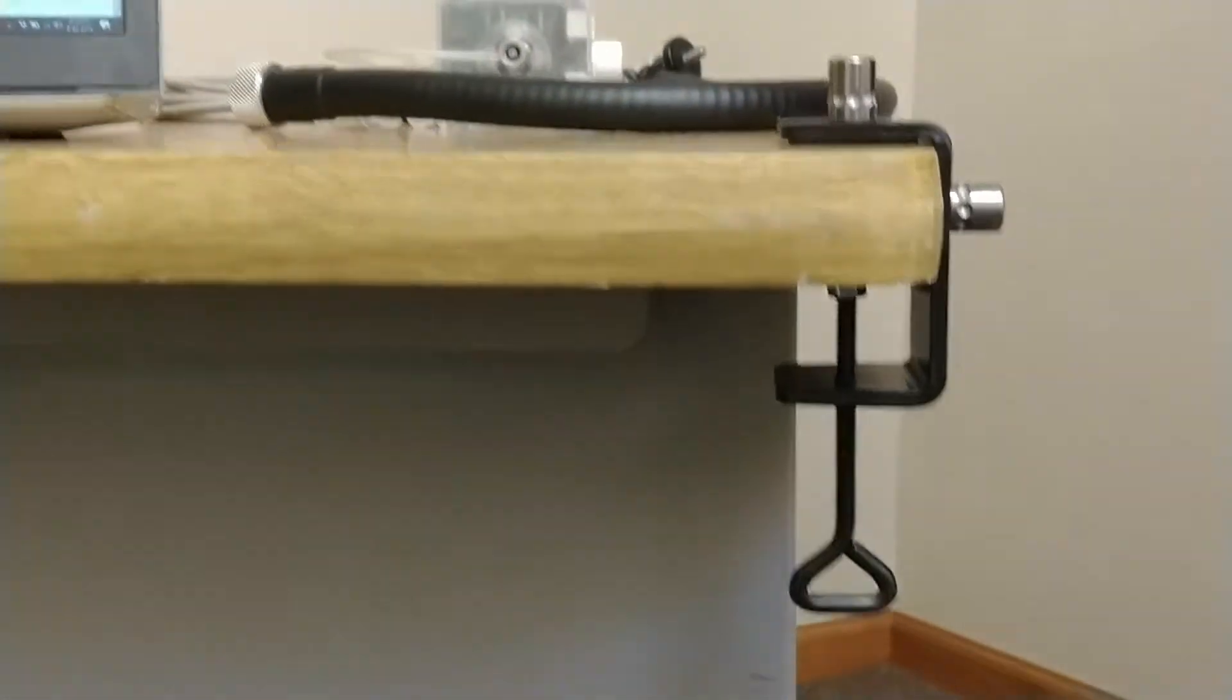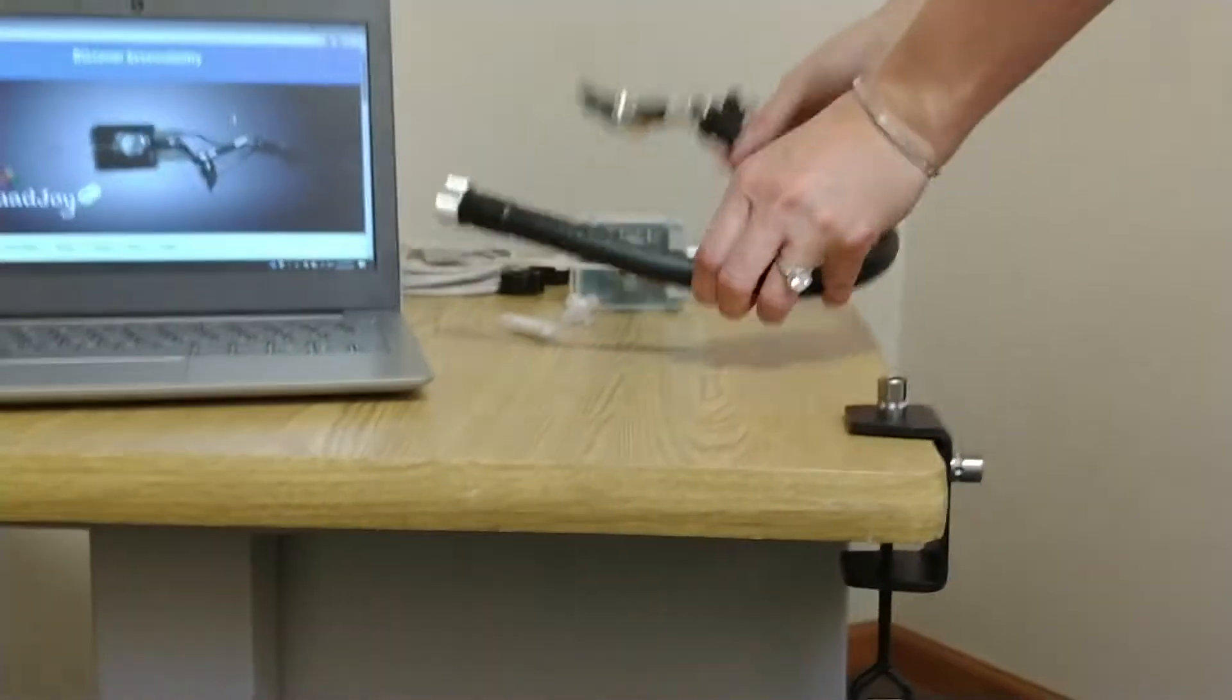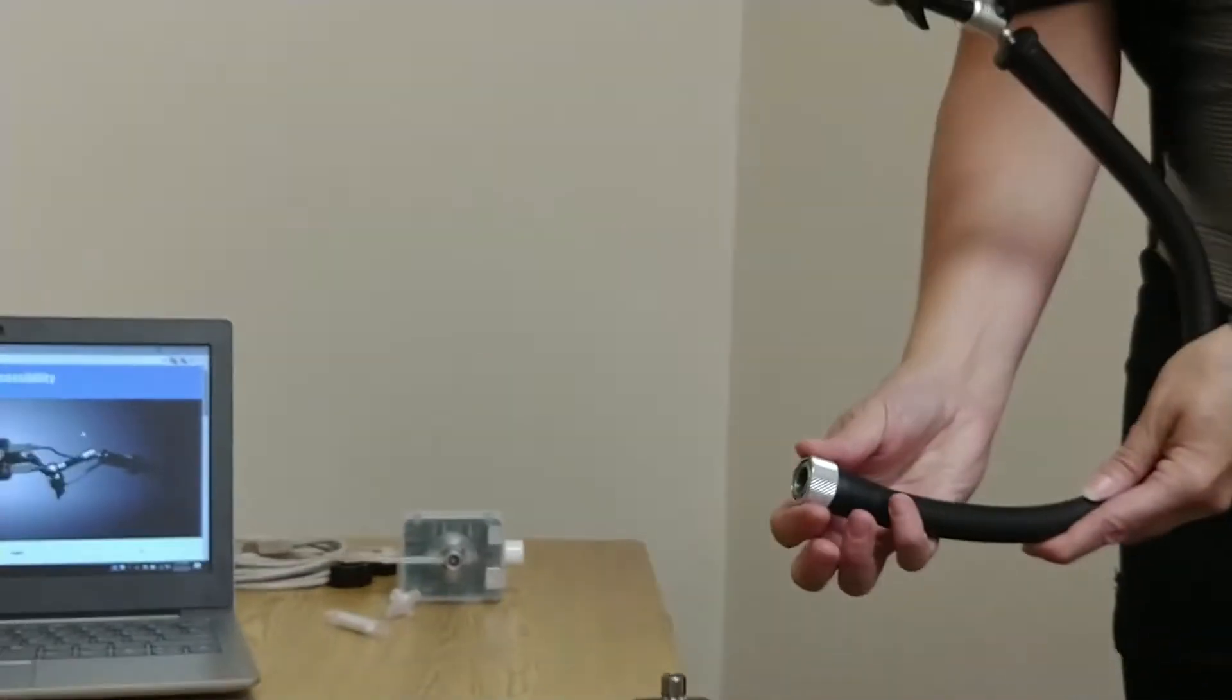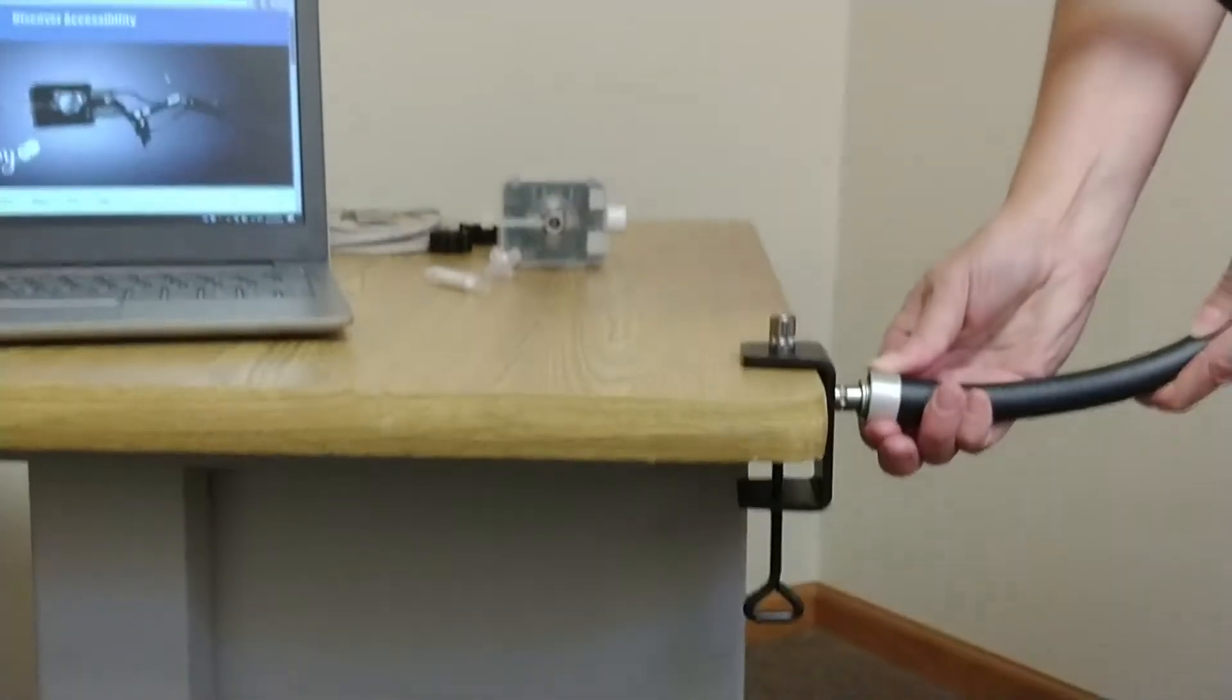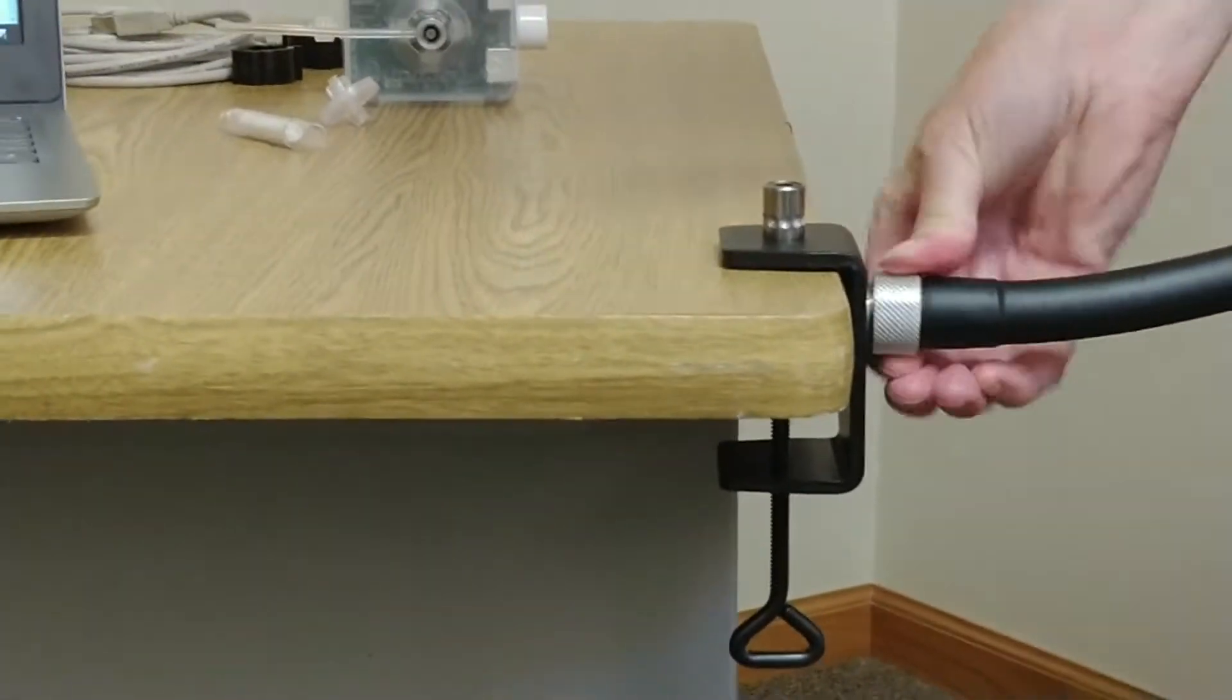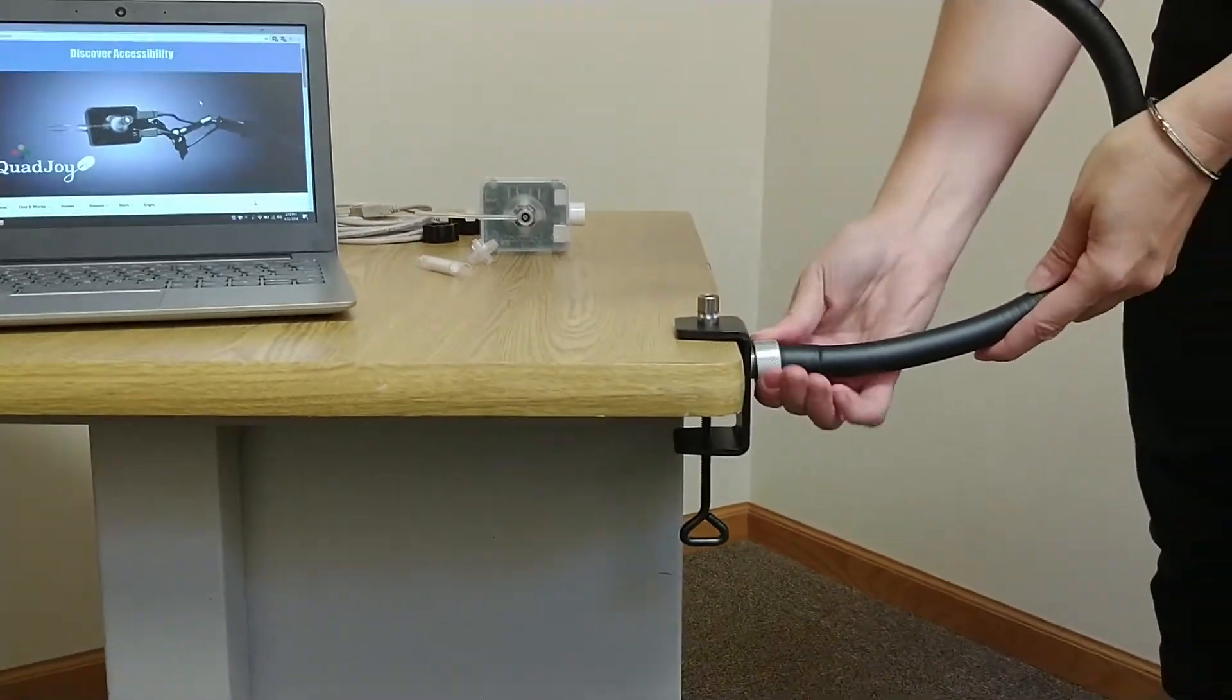Next, grab your flexible mounting arm, pull back the ring, and release to connect it to the clamp's quick connection stub.